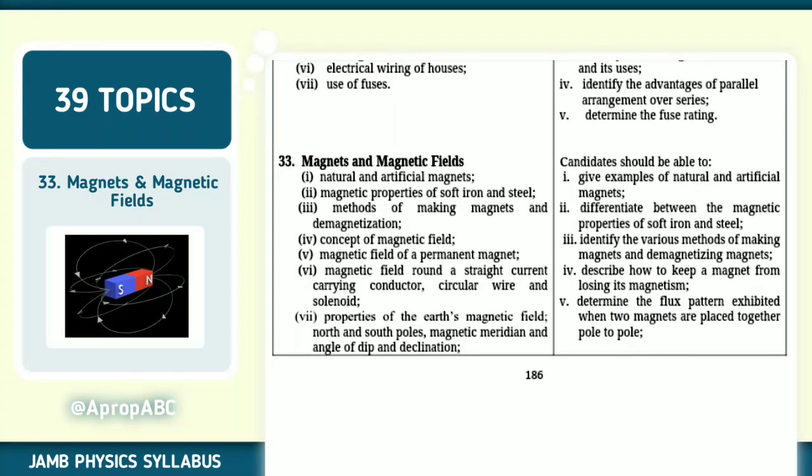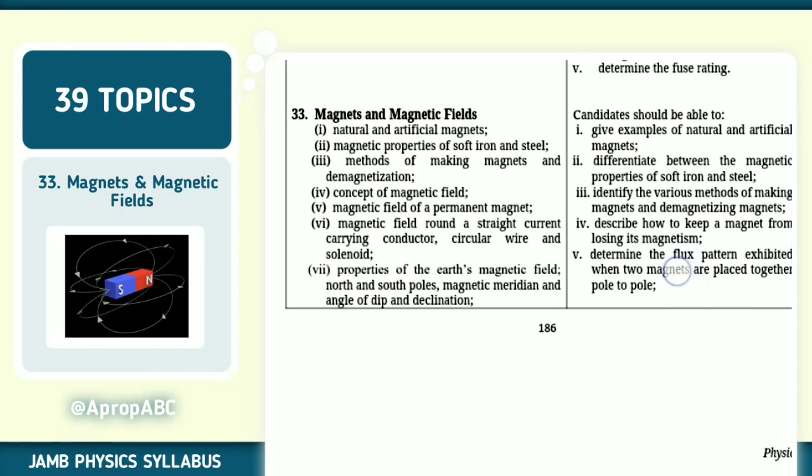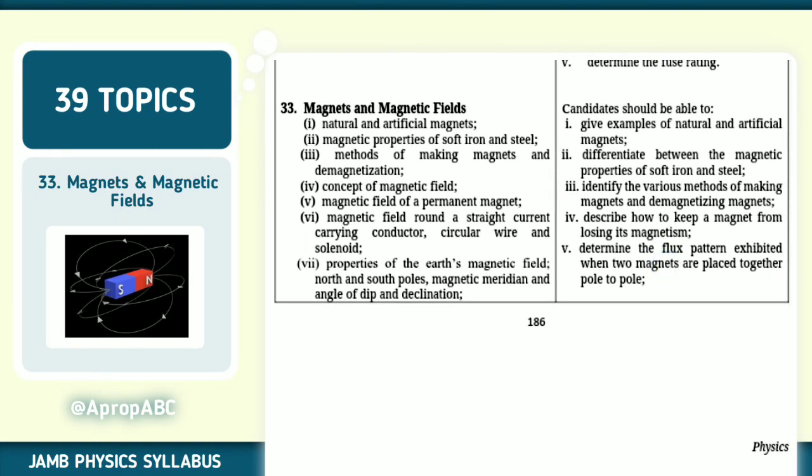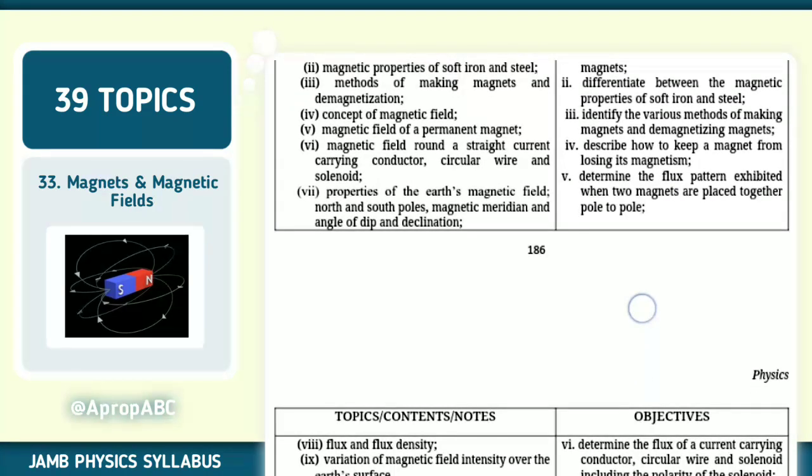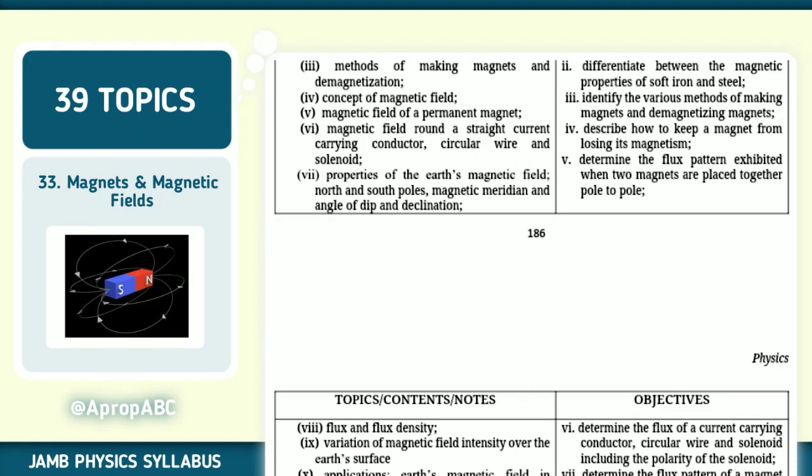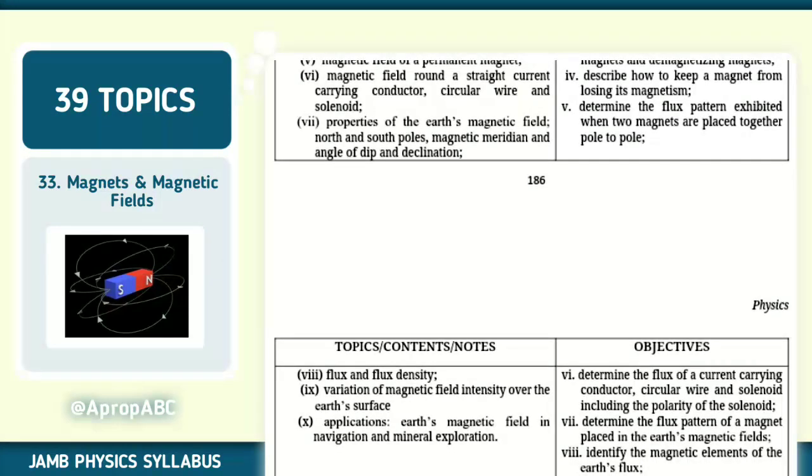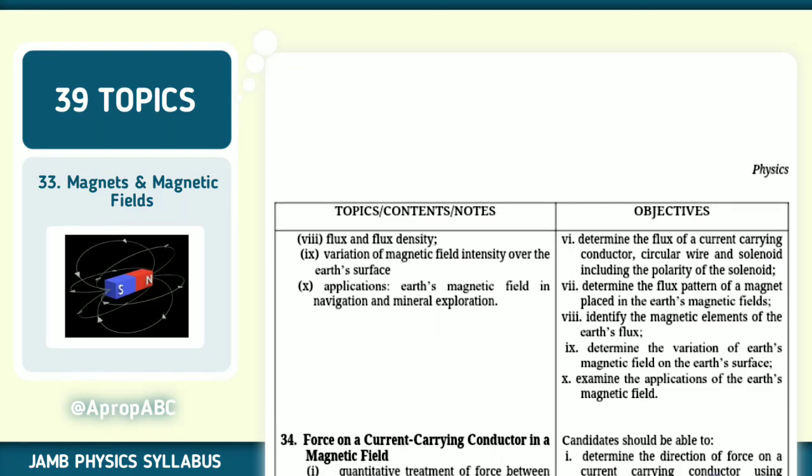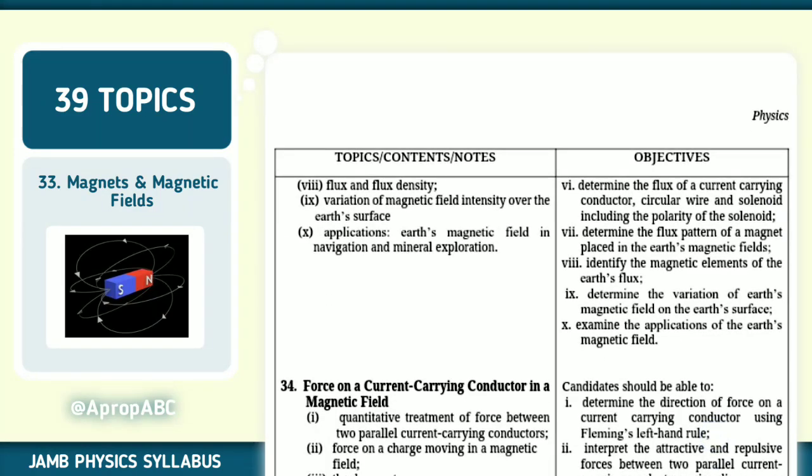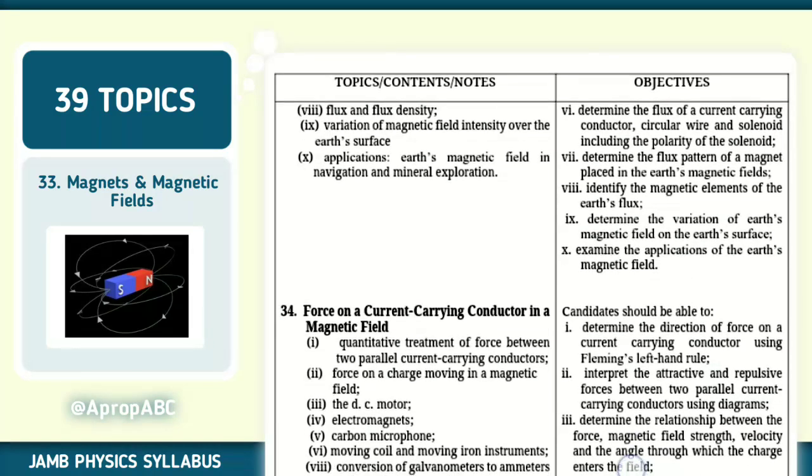Number 33, we have magnets and magnetic fields. Natural and artificial magnets. Magnetic properties of soft iron and steel. Methods of making magnets and demagnetization. Concept of magnetic field. How do you even make magnets? Note them very well. Examine the application of Earth's magnetic field through navigation and mineral exploration.